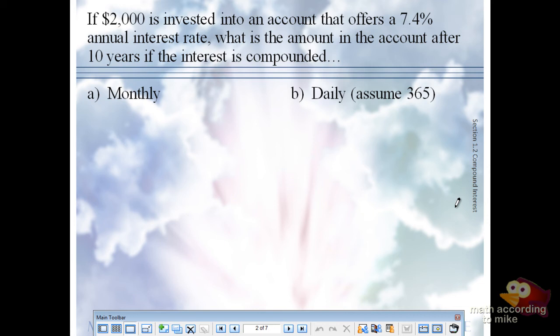So, in this one, $2,000 is invested into an account that gives you a 7.4% annual interest rate. What's the amount at the end after 10 years if it's compounded monthly than daily? Well, the more times you compound, the more interest you earn.